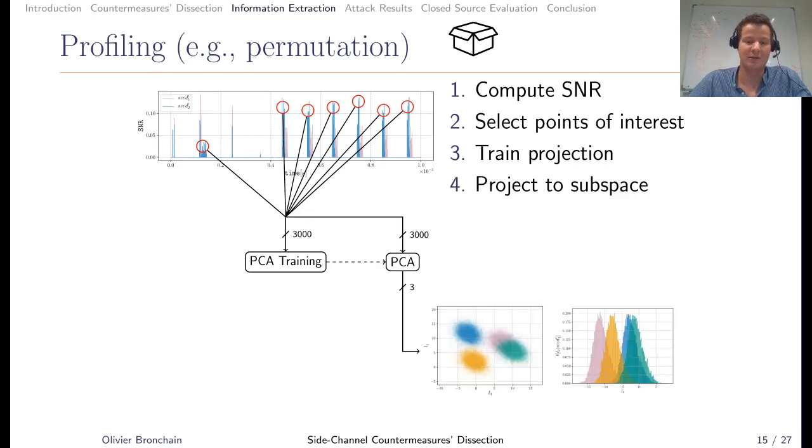You have your PCA. You can project the points by using the PCA. Then you are left with a subspace of three dimensions here. Each dimension of the graph is one dimension of the subspace, and each color corresponds to one possible seed value. On top of these clusters, you can fit PDF estimation. In this work, we used a Gaussian estimation.